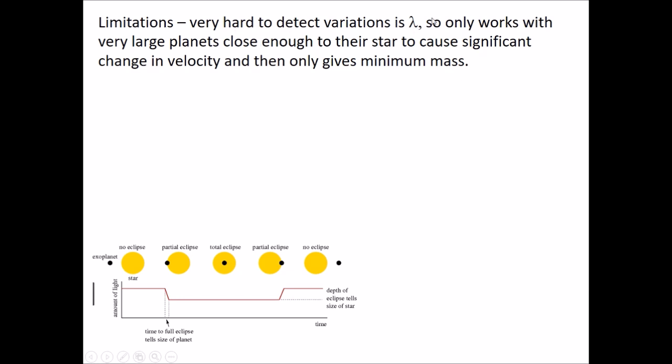There are limitations to this. Obviously, the smaller the planet is, the harder it is to detect the change in wavelength from the wobble it causes. So it only works with large planets close enough to the star to cause a significant change in velocity. Also, it only gives us a minimum mass because we don't know if we're actually in the same plane as the star and the planet's orbit.